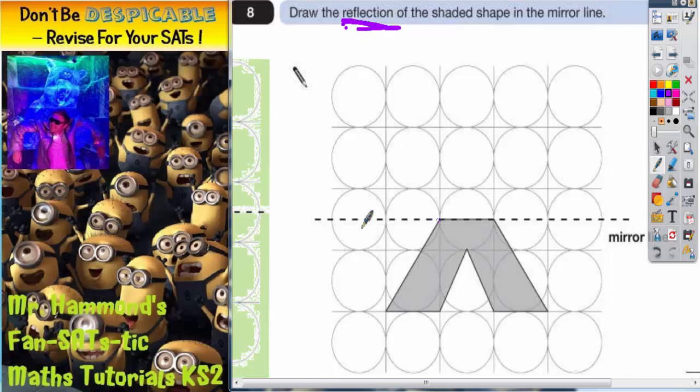We've got a mirror line there. Obviously it's a good suggestion to ask your teacher for a mirror and place the mirror on the mirror line and see what you're expecting to see on the other side of the mirror line when you look inside the mirror. So you could do that.